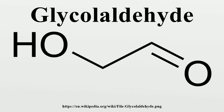Synthesis: Glycolaldehyde is the second most abundant compound formed when preparing pyrolysis oil. Biosynthesis: It can form by action of ketolase on fructose 1,6-bisphosphate in an alternate glycolysis pathway. This compound is transferred by thiamine pyrophosphate during the pentose phosphate shunt.